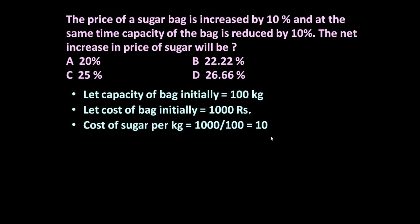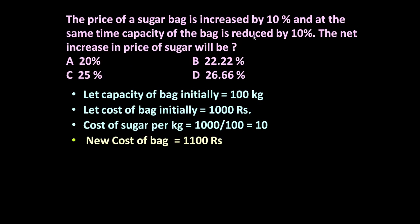Now the price of the sugar bag is increased by 10 percent. The initial cost of the bag is rupees 1000, increased by 10 percent, so the new cost of the bag is rupees 1100. At the same time the capacity of the bag is reduced by 10 percent — initially 100 kg, now reduced by 10 percent, so the new capacity is 90 kg.